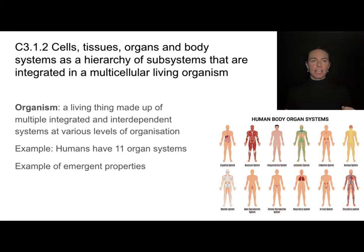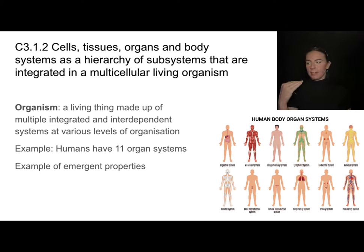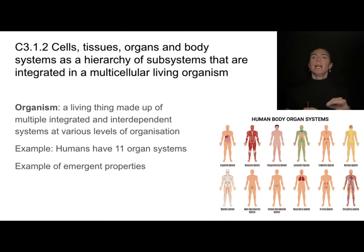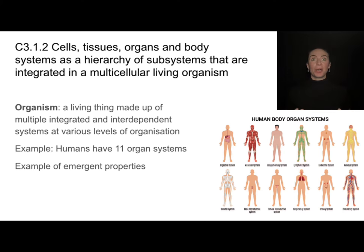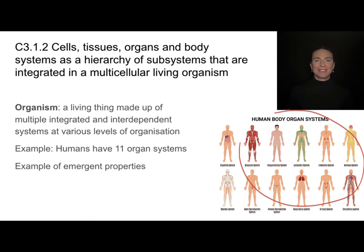Emergent properties mean that multiple things working together can accomplish more than they can accomplish singularly on their own. Think of it like an airplane — wings are cool, a seat is cool, and an engine is cool, but on their own they can't do much. When you put them together, you can accomplish something really awesome. Same thing with our body systems.